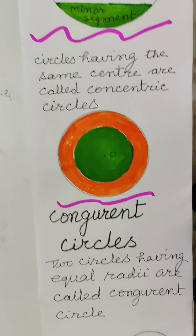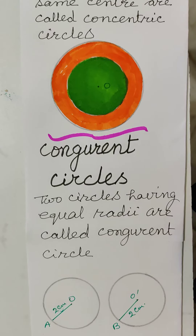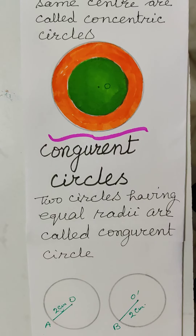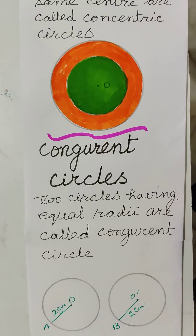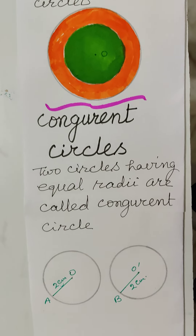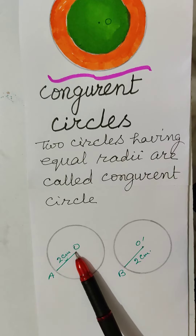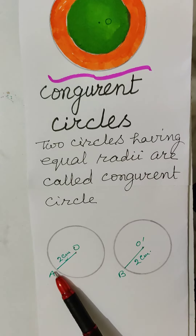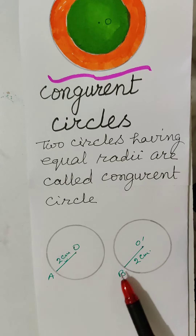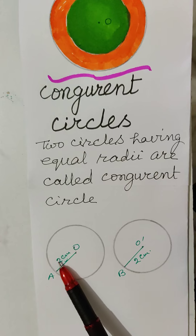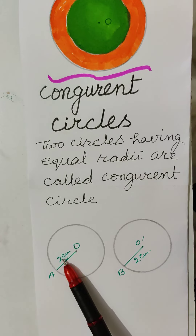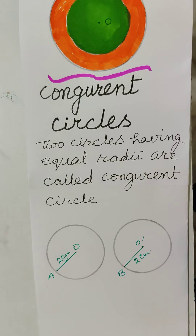Congruent circles: circles having equal radii are called congruent circles. There are two circles with equal radii OA and O'B, each having a radius of 2 cm. These two circles are congruent circles.